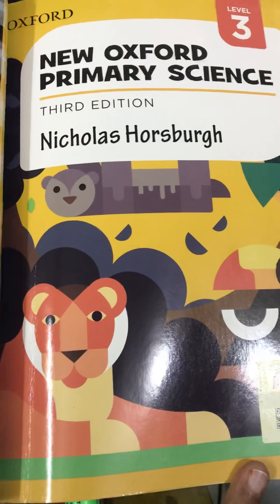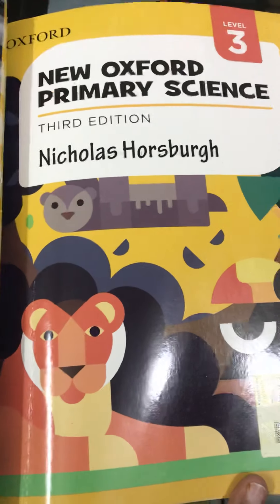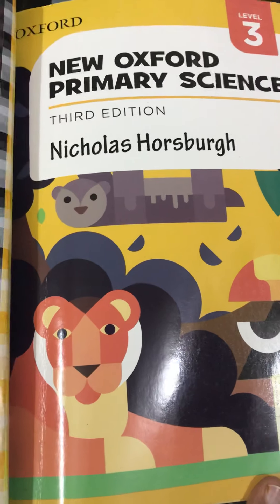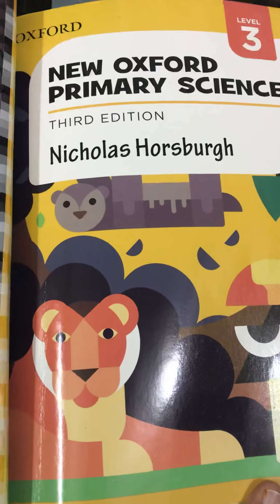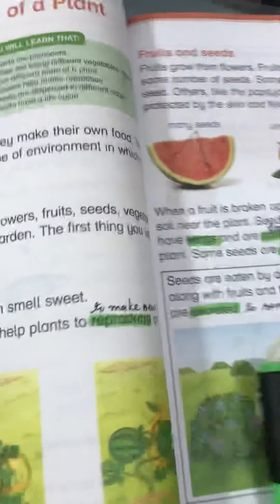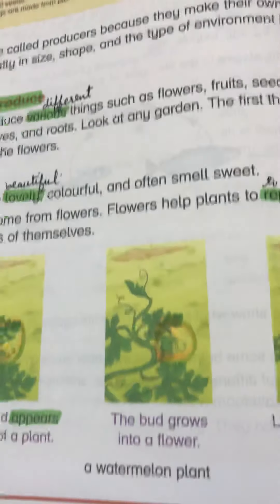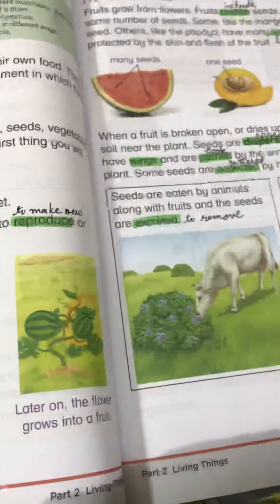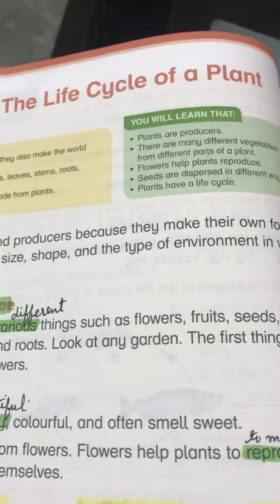Assalamu alaikum students, Class 3, how are you all? Hope you are all fine. Let's start Slot 6 Science lecture — New Oxford Primary Science 3rd Edition, Class 3. Let's start Chapter number 5: The Life Cycle of a Plant, page number 42. Let's open your page number 42 of your textbook of Science.